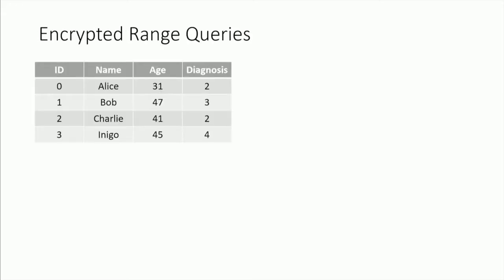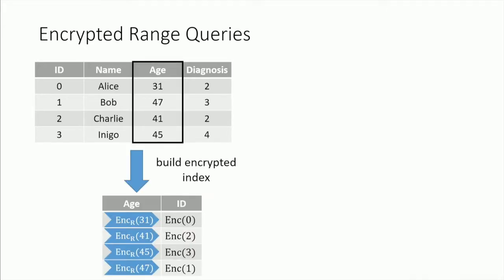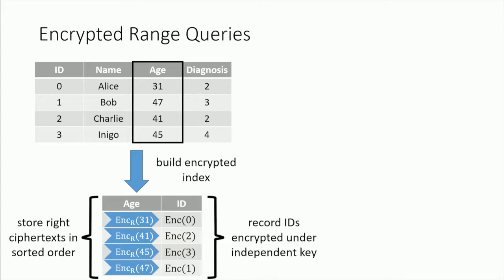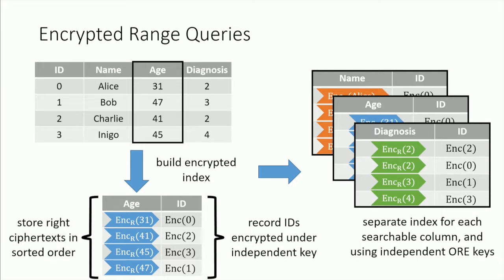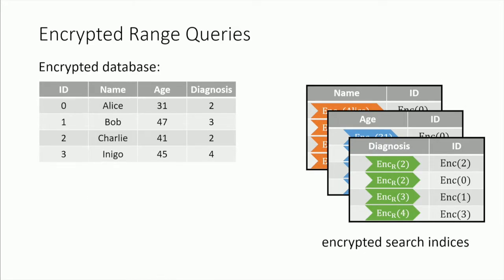How do we leverage a decomposable ORE scheme to build a system for range queries on encrypted data? We take our database and build indices — typically done to support searching. In the encrypted index, for each column we want to search over — say the age column — we encrypt each element using an ORE scheme, and critically, we only store the right ciphertext. We also store the encrypted record indices under a semantically secure encryption scheme. We repeat this for each column: name, age, diagnosis — three different indices under three different ORE instances. Finally, we encrypt the contents of the database using any semantically secure encryption scheme. The client holds the secret keys to query this database.